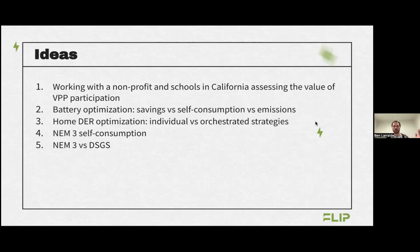I love batteries — that's what I work on every day. There's a big focus on improving savings because consumers are concerned with how much it costs. It's kind of expensive — maybe between five and ten thousand dollars just for the battery. With NEM3, if you sell power to the grid, you don't make much money. So consumers might be more interested in lowering their bills through self-consumption optimization.